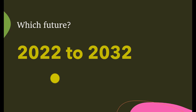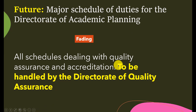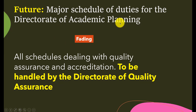My projections relate to the 2022–2032 time span. What will be the major schedule of duties for the Director of Academic Planning in this future? One schedule that is fading — which I would not want to see a Director of Academic Planning undertaking — is dealing with quality assurance and accreditation. This schedule should be handled by the Directorate of Quality Assurance. There is no need to be preparing self-study forms, welcoming accreditors, booking hotels — that is the business of the Directorate of Quality Assurance, not academic planning.